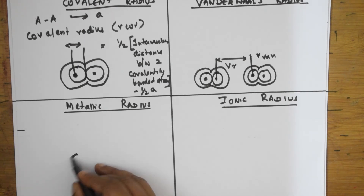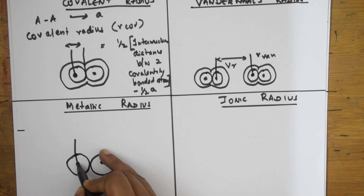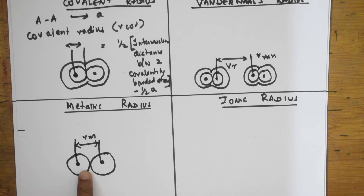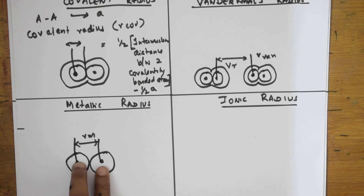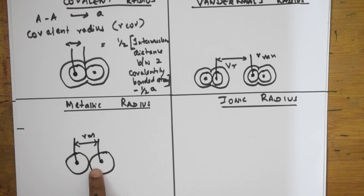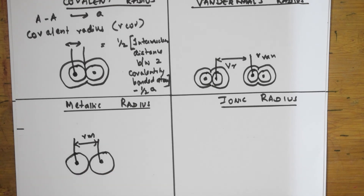Next is metallic radius. Drawing two adjacent metal atoms — the metallic radius is half of the distance between any two successive nuclei of two adjacent metal atoms in a closely packed crystal lattice. That is called metallic radius, denoted R(M).